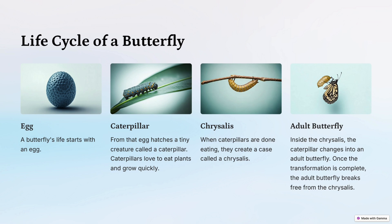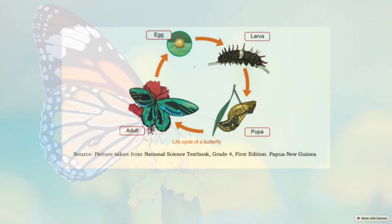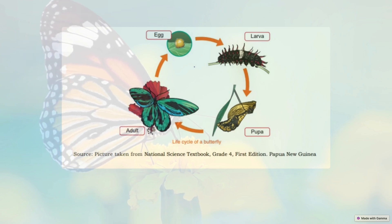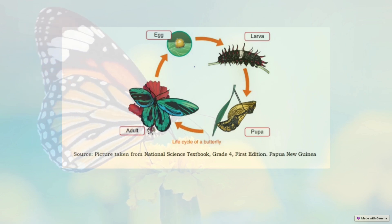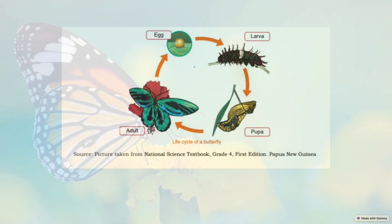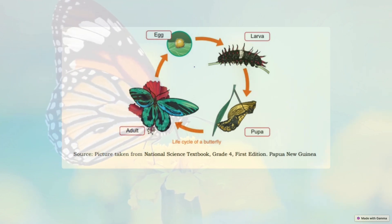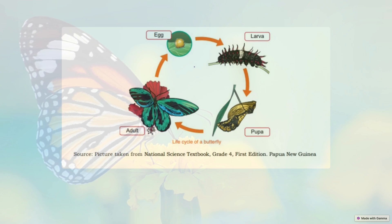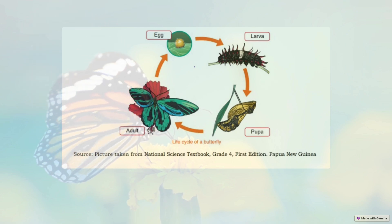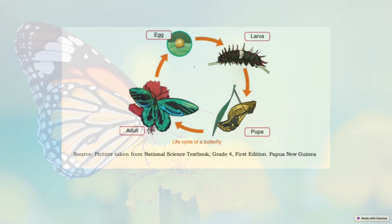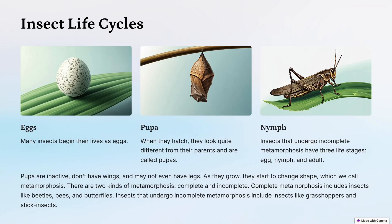Once the transformation is complete, the adult butterfly breaks free from the chrysalis. Looking at the illustration, we can see the life cycle of a butterfly: from egg, to larvae, then pupa — the covering before it becomes an adult butterfly.